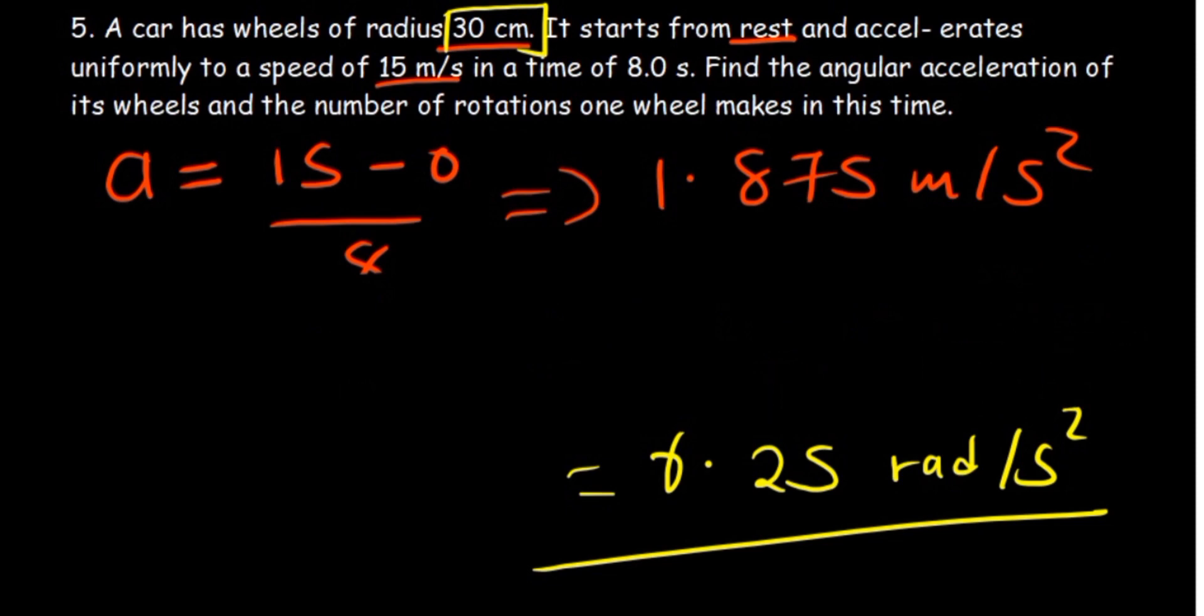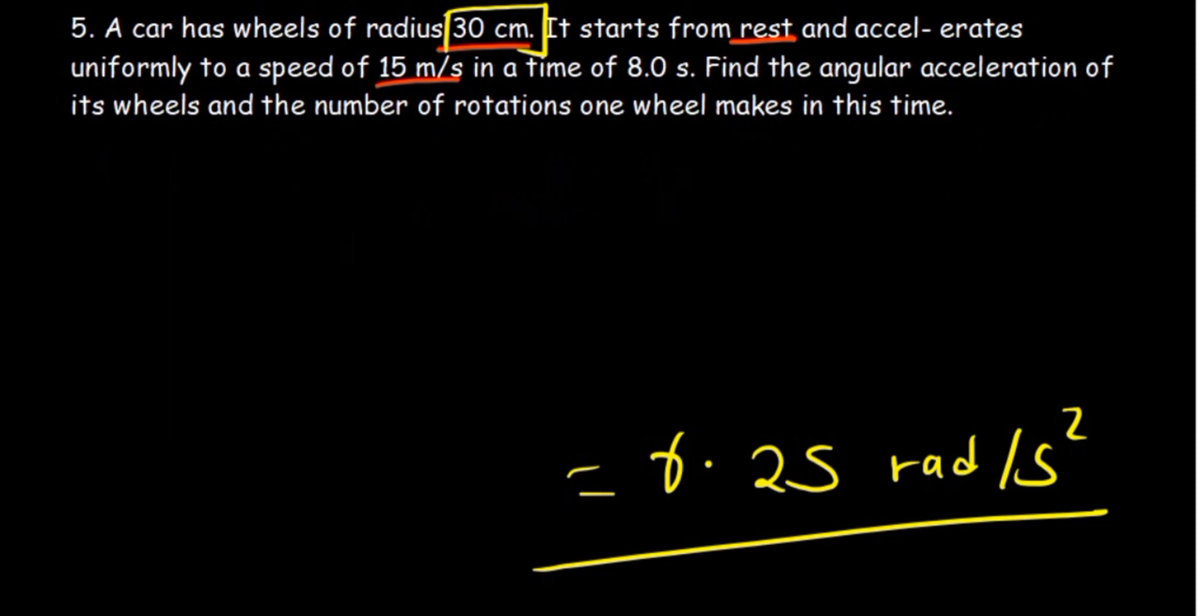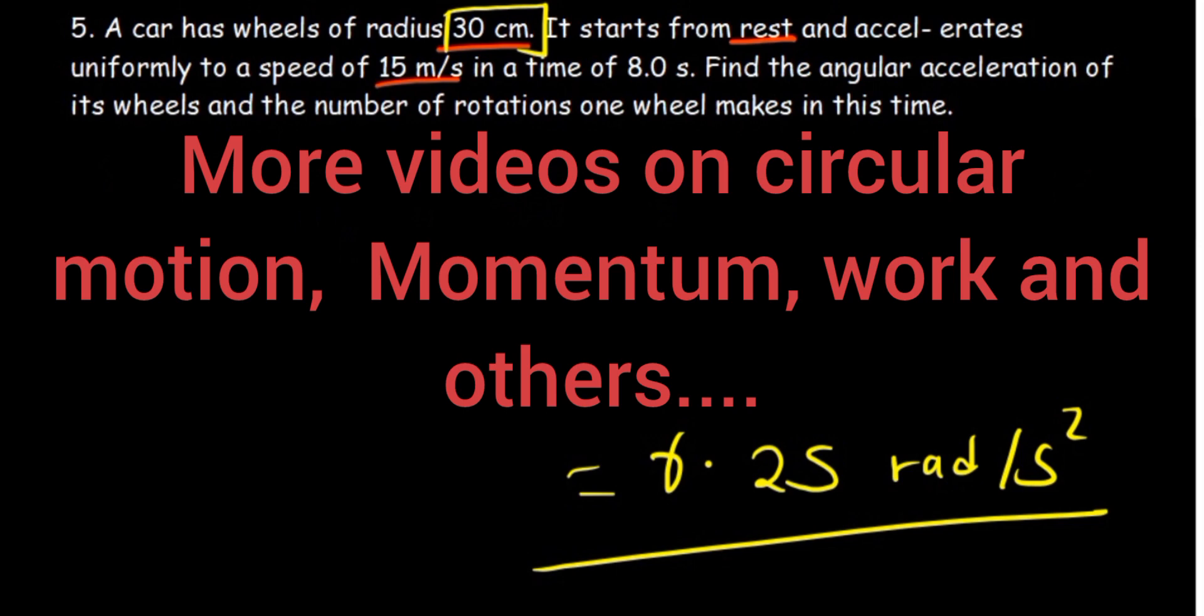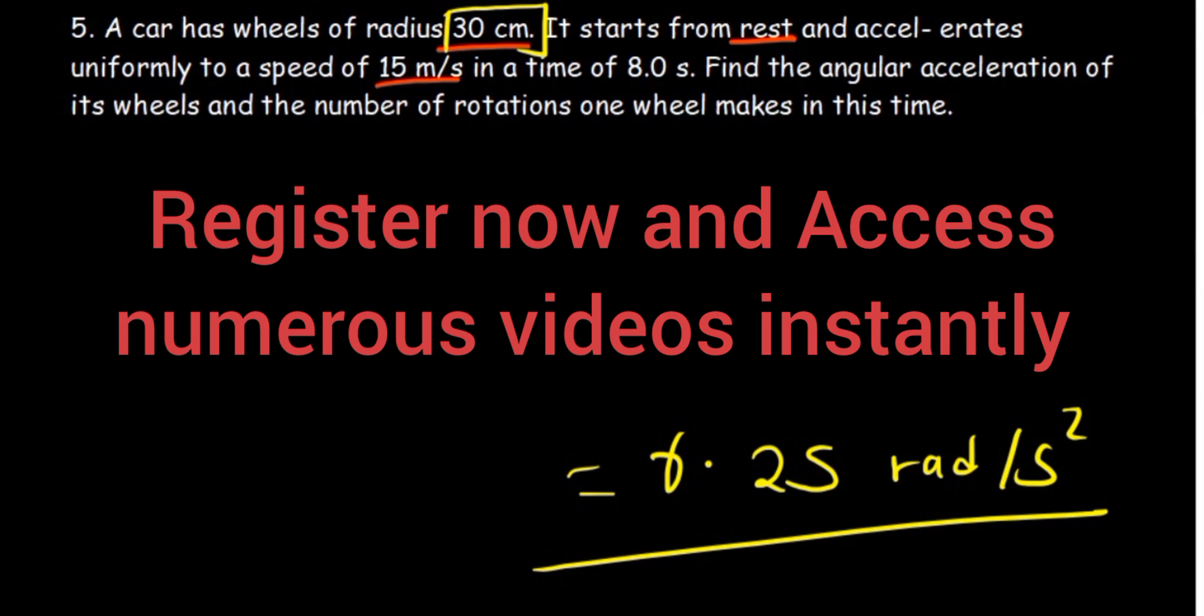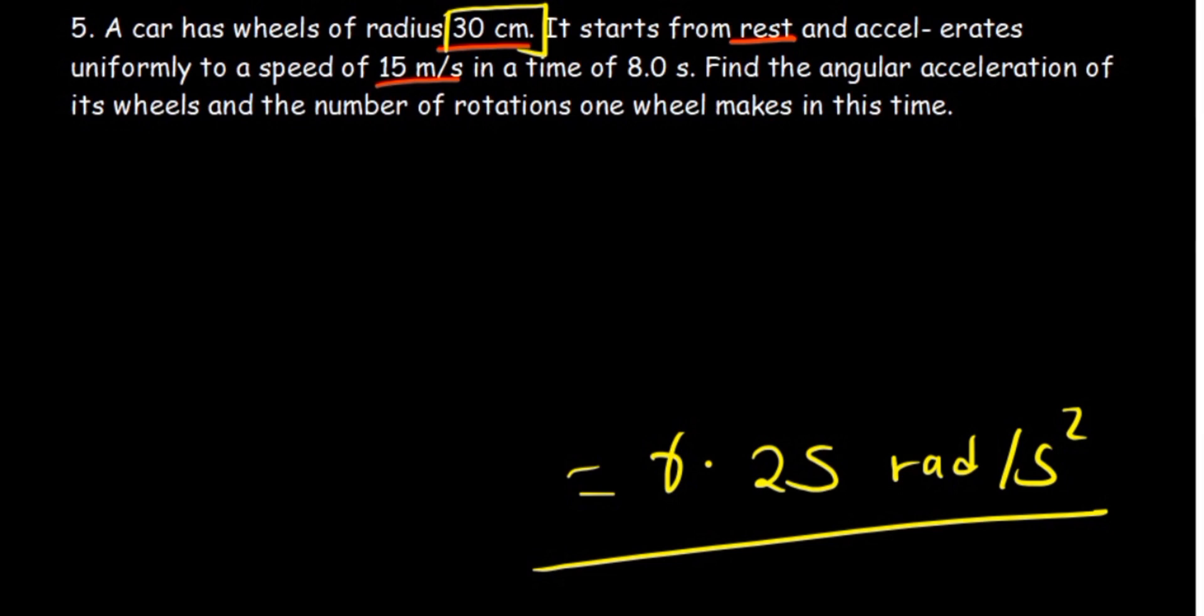We can now answer the other question, which is determine the number of rotations one wheel makes in this time. What relation can we use? We can go back to the same equation that we used in the previous question.